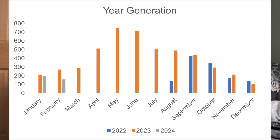Let's have a look back at my solar generation in February. I'm starting with this graph showing my generation for each month, comparing different years. The orange bars are for 2023 with a full year's data, the darker blue is for 2022 from late August onwards, and the pale grey is for 2024. This graph really sums up what February was like — last year we generated about 270 kilowatt hours in February.